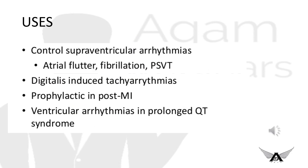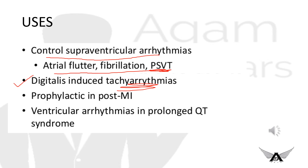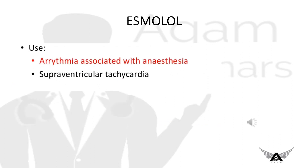Class 2 drugs are used in controlling supraventricular arrhythmias such as atrial flutter, fibrillation, and paroxysmal supraventricular tachycardia. They are also used to treat tachyarrhythmias caused by adrenergic stimulation — such as in hyperthyroidism, pheochromocytoma, and during anesthesia with halothane — as well as digitalis-induced tachyarrhythmias, prophylactically post-MI, in ventricular arrhythmias, and in prolonged QT syndrome. Esmolol in particular is used in arrhythmias associated with anesthesia and supraventricular tachycardia.